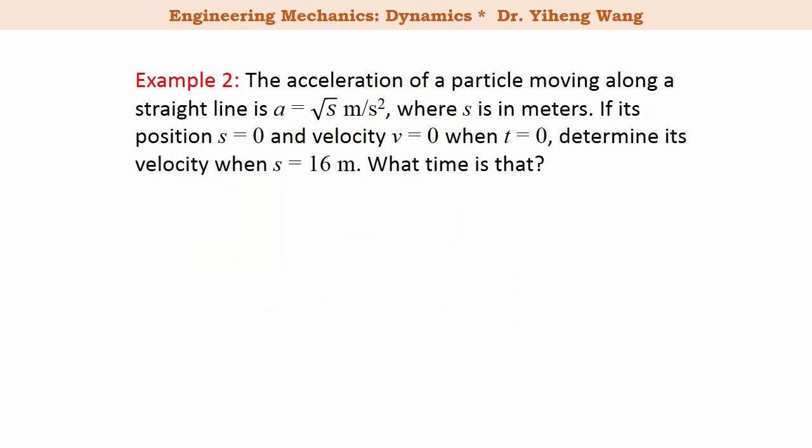Let's look at another example. In this problem, acceleration is given not as a function of time but as a function of position: a equals the square root of s. Initially, both velocity and position of the particle are zero, and we need to determine the velocity and time when the position of the particle is 16 meters. Let's first look at the velocity.